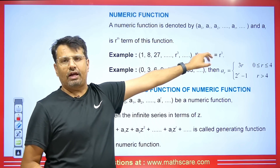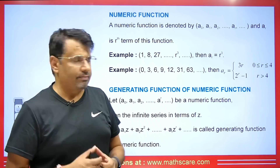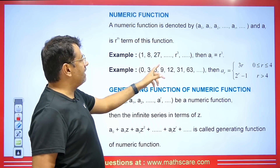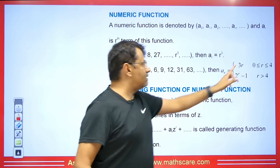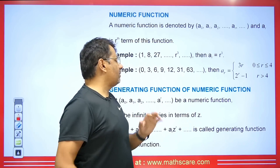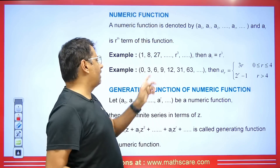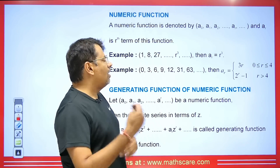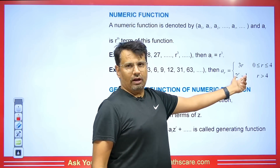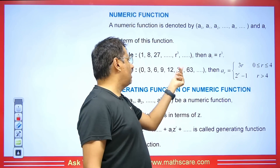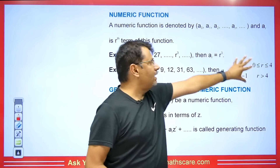This sequence follows a certain formula — the Rth term formula. For example, if we have 0, 3, 6, 9, 12, 31, 63, the Rth term is 3R for values 0 through 4. When we put R=5, we get 2^5 − 1 = 31, so this sequence follows a combined formula. The Rth term represents the general formula for the sequence.